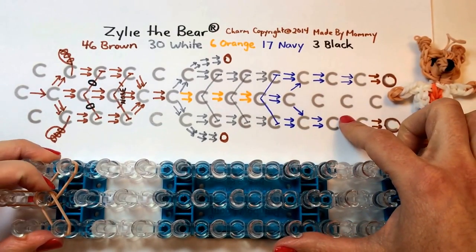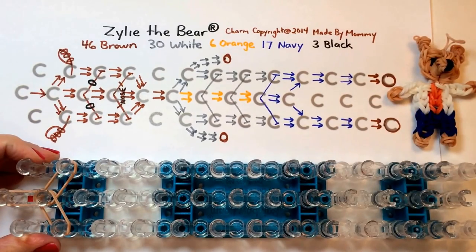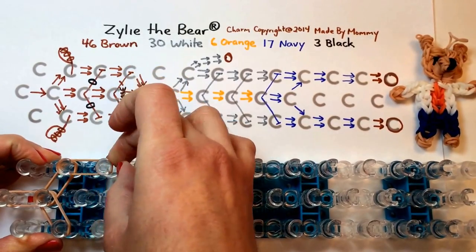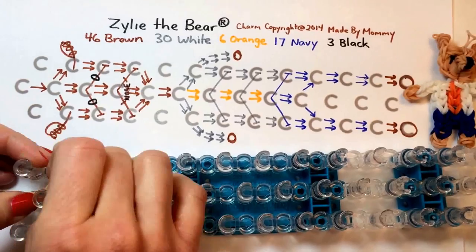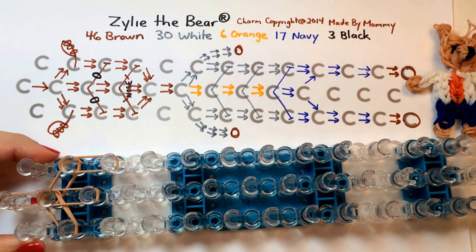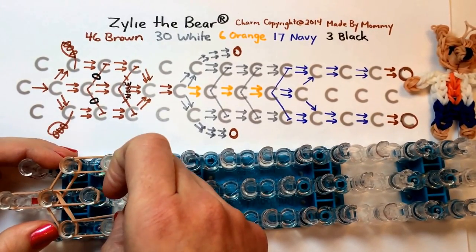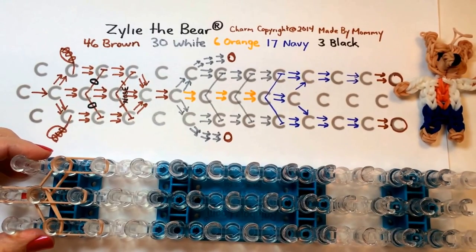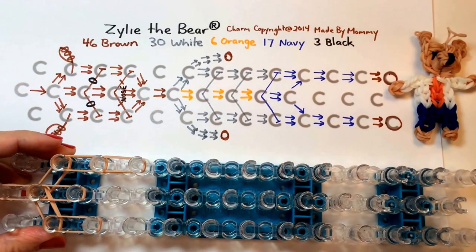This chart will be posted at madebymommy.com if you'd like to print it out to follow along. I do two at a time. It really makes the charm when it's done look a lot more solid. The structure would hold together with just one, but the result might be a little bit flimsy and you'd be able to see light through it. This makes the colors really solid and strong.